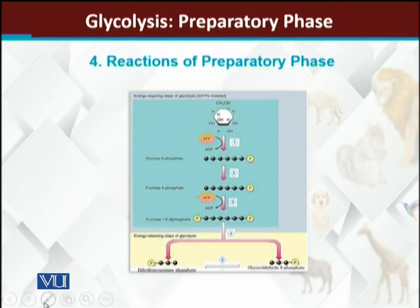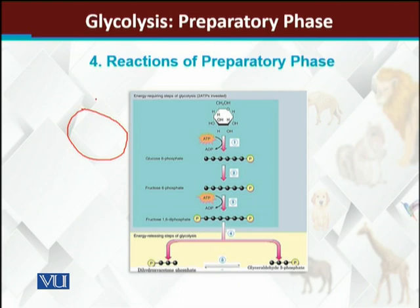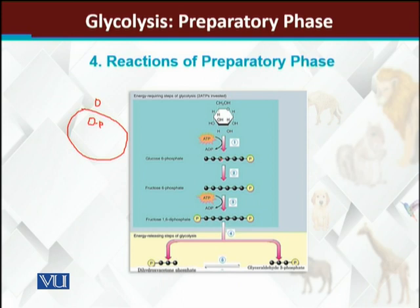Preparatory phase کو continue کروانے کے لئے — here we have the diagram of preparatory phase۔ We are having 5 steps۔ جیسے ہی glucose molecule cell کے اندر enter ہوگا، سب سے پہلے اس glucose کے ساتھ ایک phosphate group attach کر دیا جاتا ہے، اور اس سے بن جاتا ہے glucose-6-phosphate۔ یہ glycolysis کا سب سے پہلا step ہے، by utilizing ATP۔ یہ وہ first ATP molecule ہے جو اس step کے لئے چاہیے۔